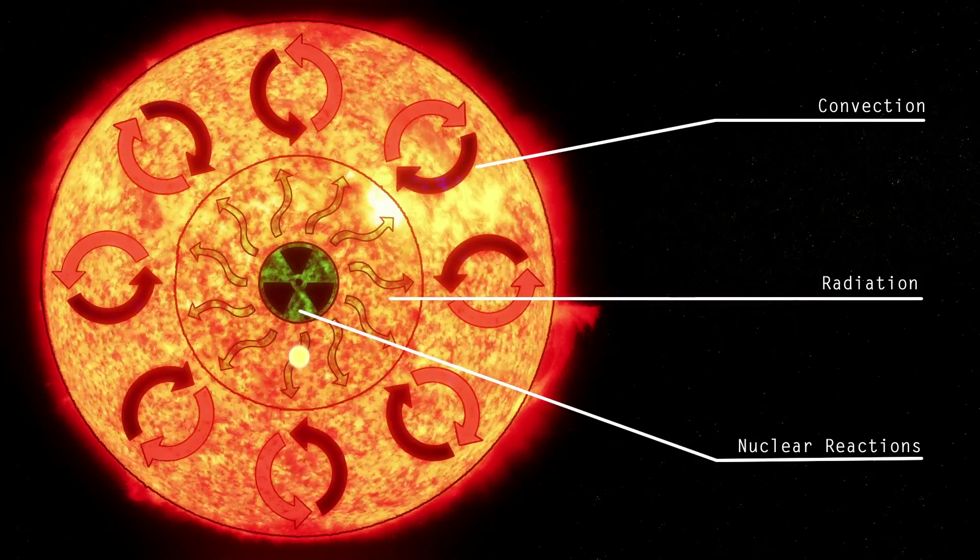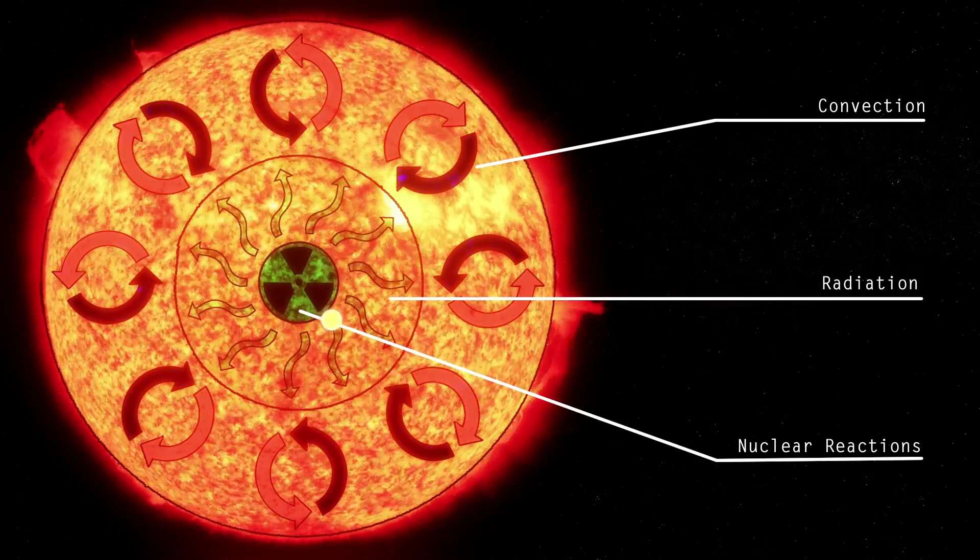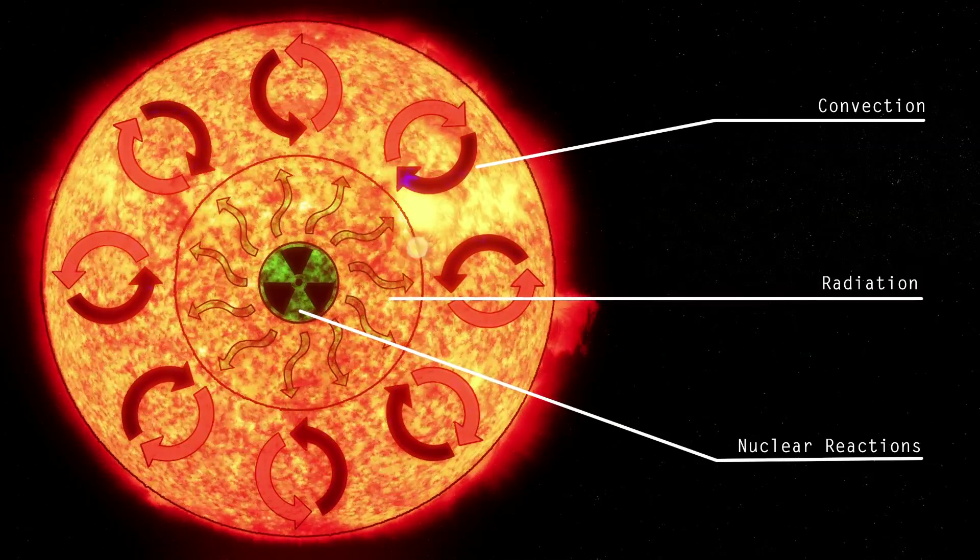Thus, the photon is bounced around repeatedly, very slowly making its way out of the sun in what is termed a random walk.